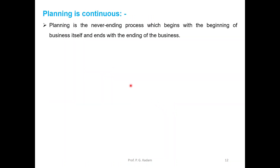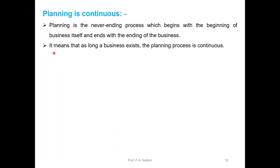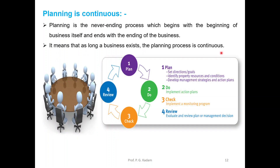Planning is also a continuous process — it is never-ending. From the beginning of the business to the end, planning continues. As long as the business exists, the planning process is continuous. This is represented by PDCR: Plan, Do, Check, and Review. Review means evaluating the plan and management decision. Check means implementing and monitoring the program. First we plan, then do it, implement the action plan, then check and revise it.